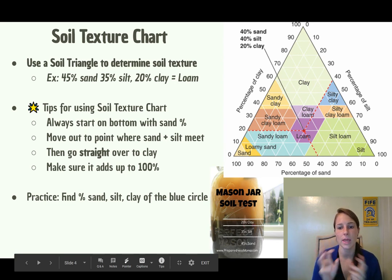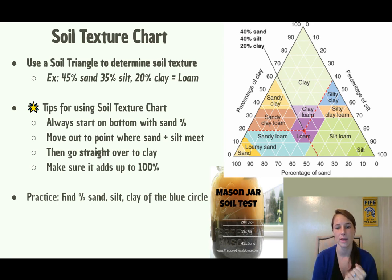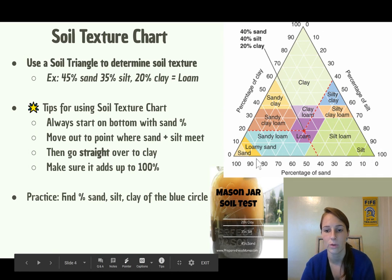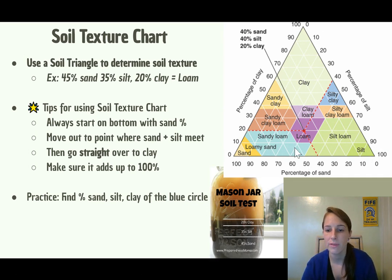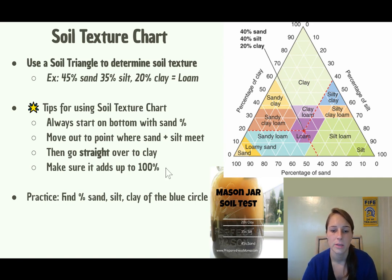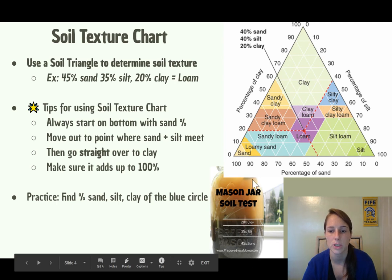We don't talk about soil in those different percentages — we talk about the type of soil it is. You can use these percentages to determine the soil texture with the soil triangle. Starting with 45% sand down at the bottom, we go up diagonally, then find 35% silt, and then 20% clay. Looking at where those intersect on the purple region, this example gives us loam.